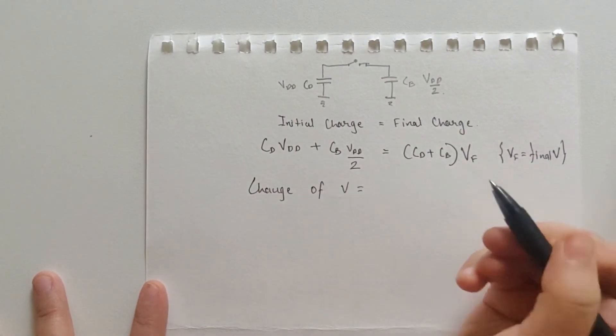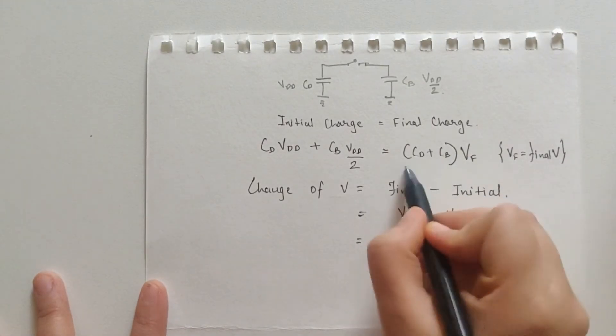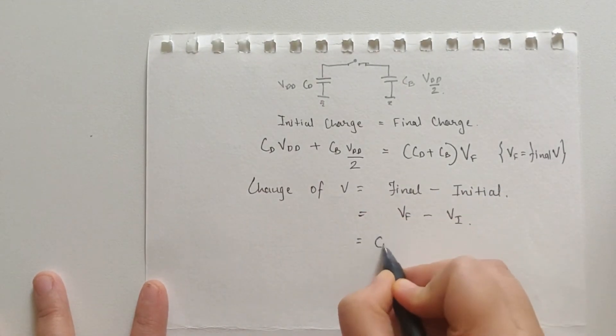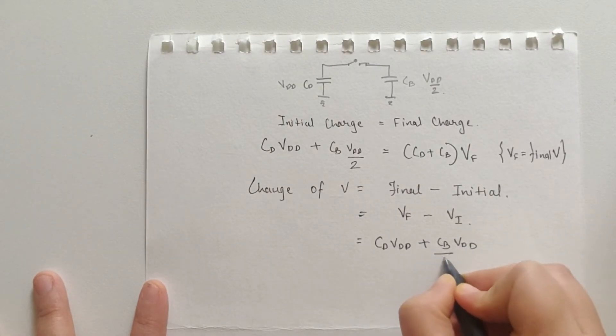Now, change of voltage or delta V can be written as final voltage minus initial voltage. So, we can substitute the value of VF from the previous equation. Let's keep on solving this.